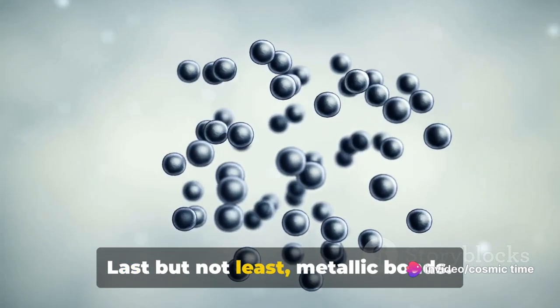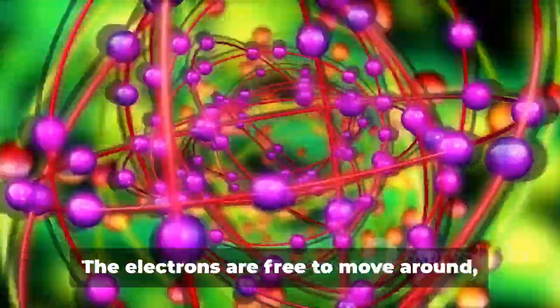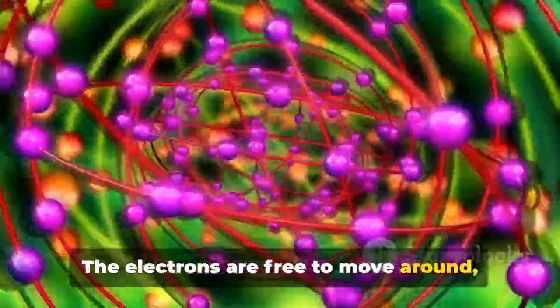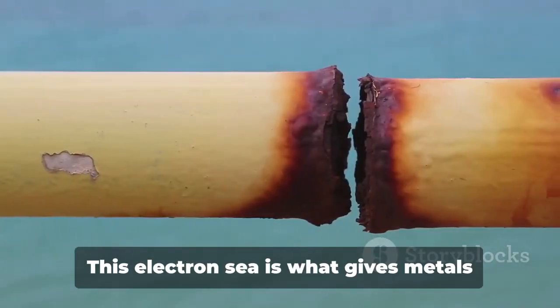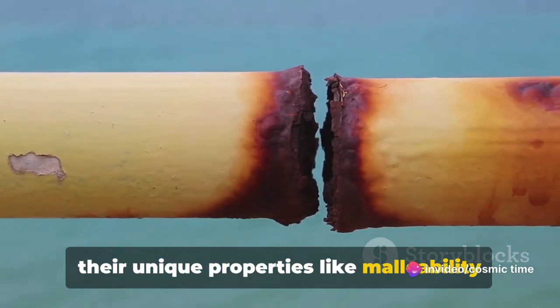Last but not least, metallic bonds. Think of these as a communal sharing of electrons. The electrons are free to move around creating a sea of electrons. This electron sea is what gives metals their unique properties like malleability and conductivity.